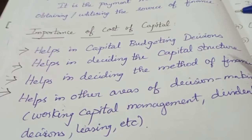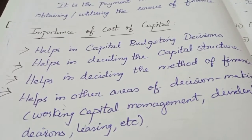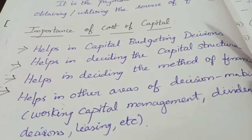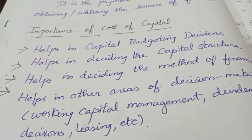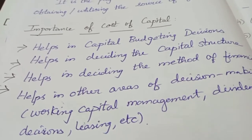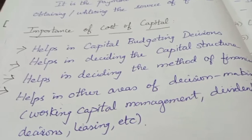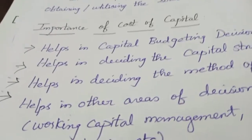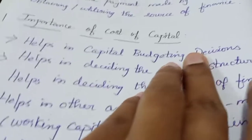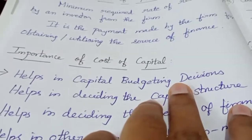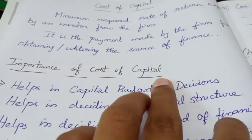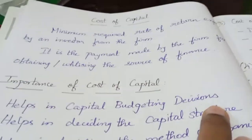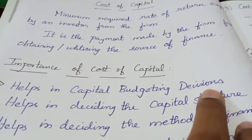We can invest in projects and assets, earn profits, and pay returns to shareholders. In that situation, cost of capital guides capital budgeting decisions. We need to determine how to raise funds and how to pay returns.